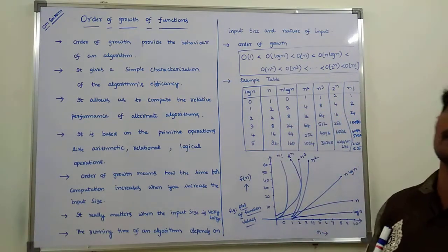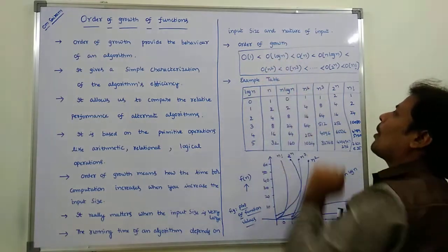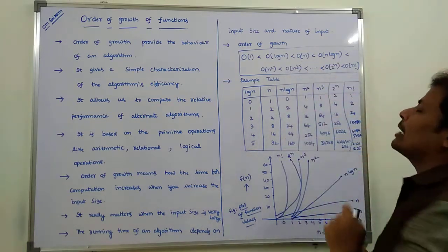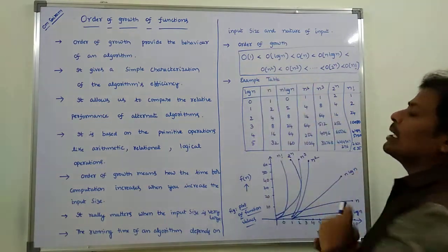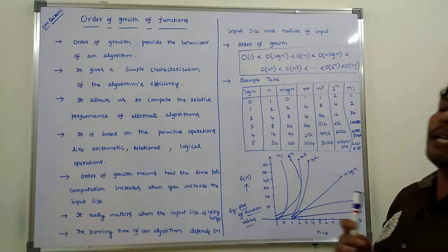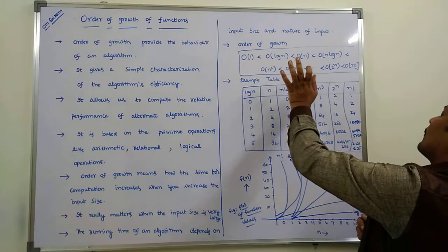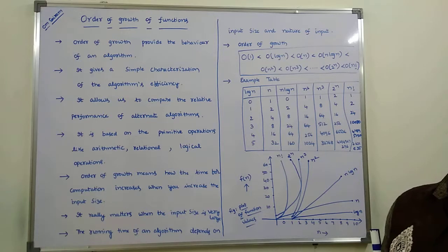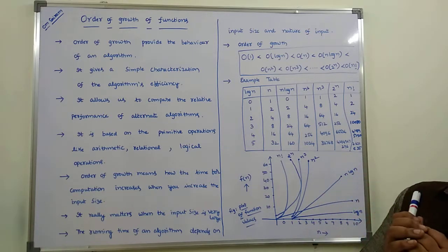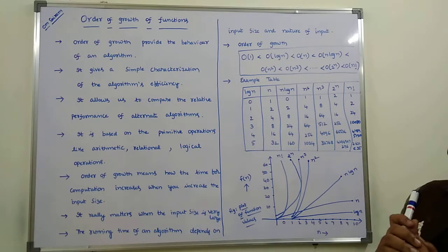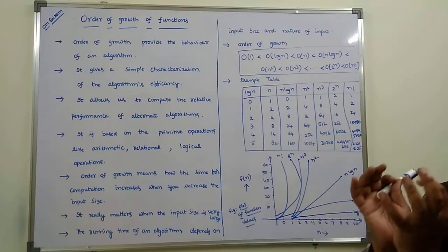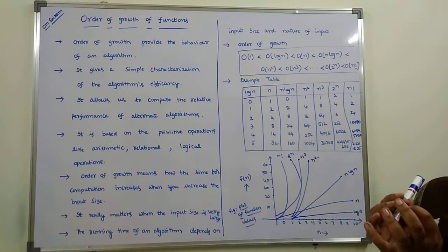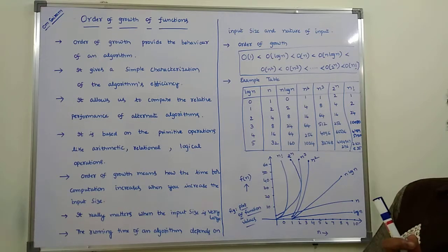The relation between these functions is: O(1) < O(log n) < O(n) < O(n log n) < O(n²) < O(n³) < O(2ⁿ) < O(n!). By using this order of growth, we can determine the efficiency of algorithms — which algorithms are efficient can be discussed using the order of growth of functions.